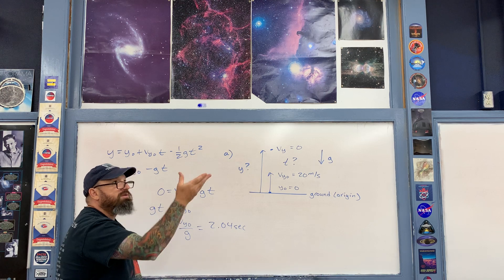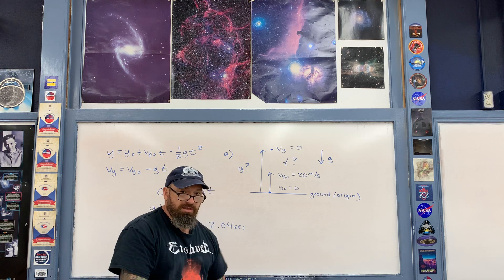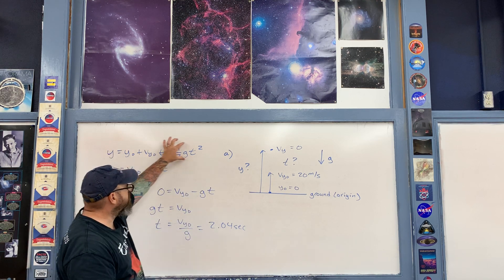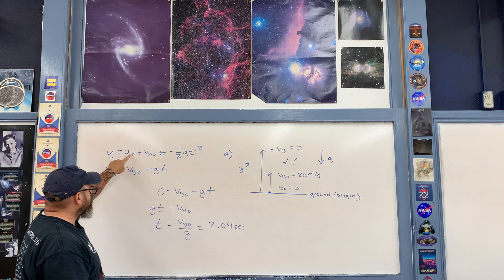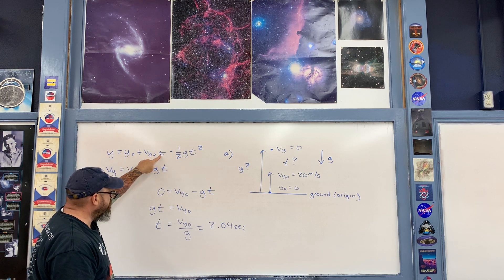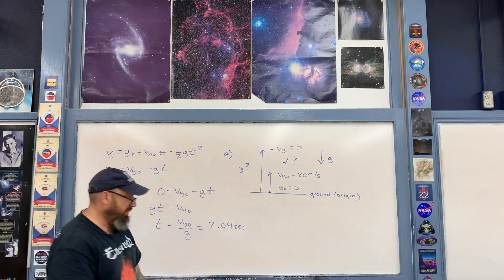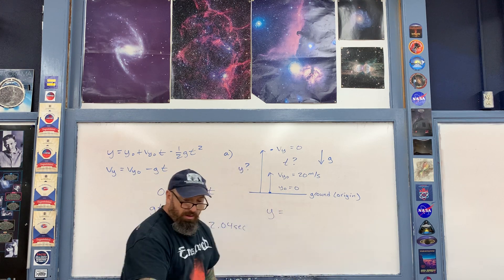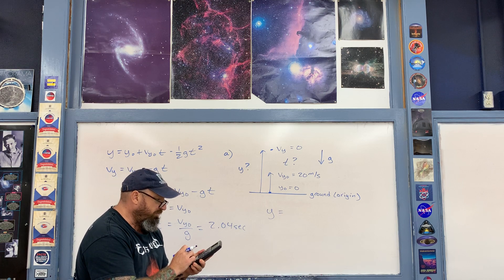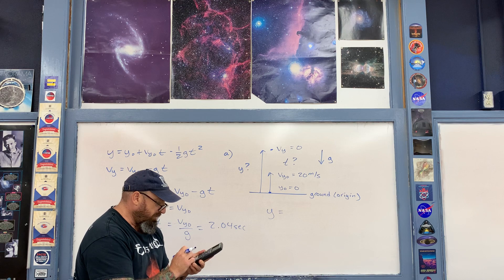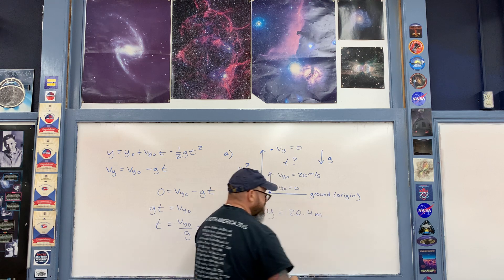To calculate the maximum height, we plug everything into the position equation. There's no additional algebra — we have all the values on the right-hand side: y_0 is 0, so we compute 0 plus 20 times 2.04 minus one-half times 9.8 times 2.04 squared. This ends up being about 20.4 meters, which is the maximum height reached.